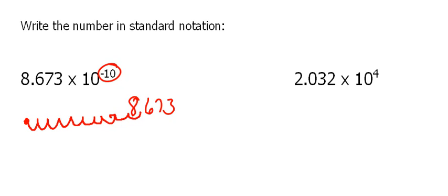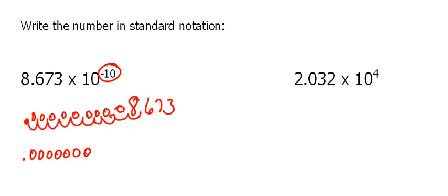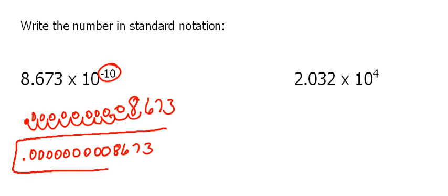Moving 10 places to the left means I have to fill in all of those missing spots with zeros so that we have the proper places. So when I write this number out, that's going to be 0.0000000008673. Always good to go back and double-check, because forgetting even one zero could make a huge, huge difference. So you always want to double-check how many zeros you're putting in there.